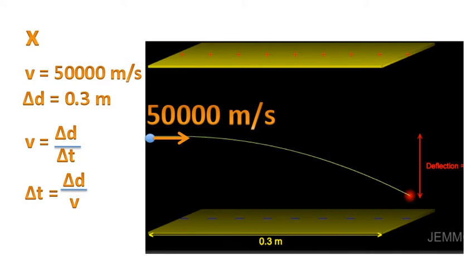Rearranging that for time, we have that the time is 6 times 10 to the negative 6 seconds. That's the amount of time the charged particle spends moving from this point to that point.